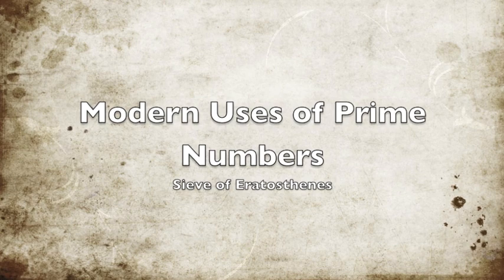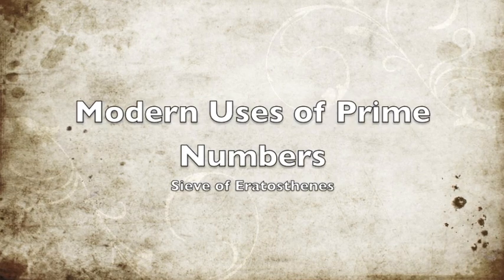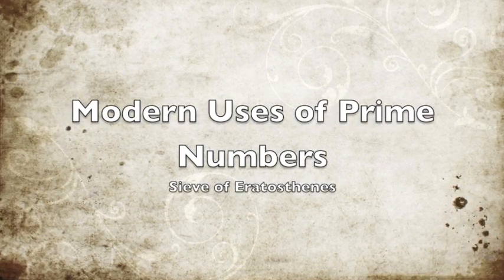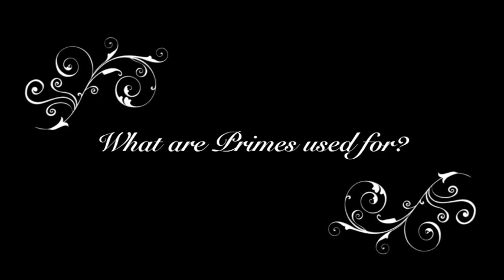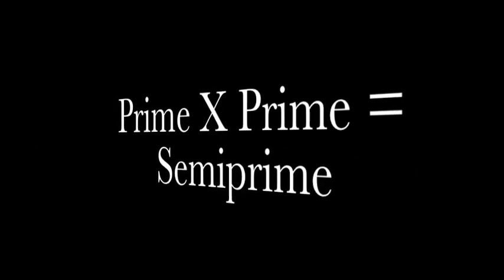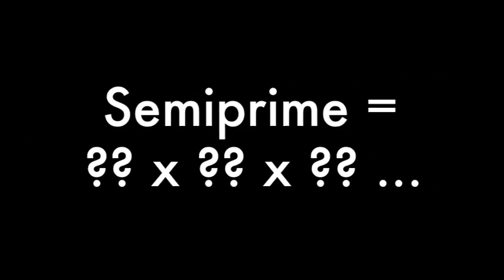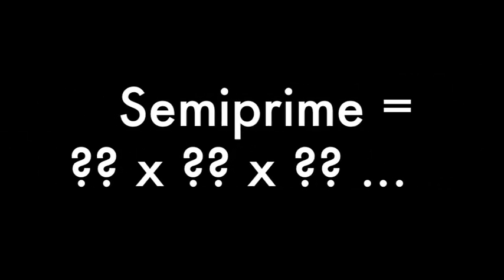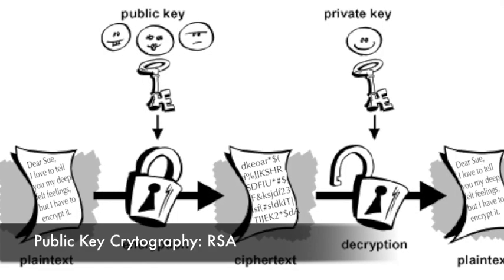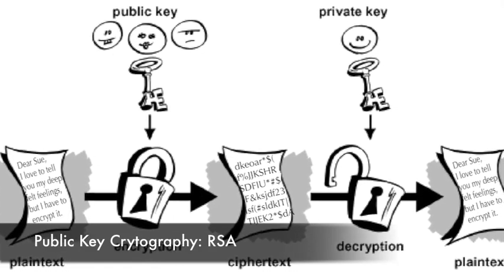We know that the sieve of Eratosthenes can be used to find prime numbers. So after all the fuss about finding primes, you may be wondering, what can prime numbers be used for? We know that it is relatively easy to multiply two prime numbers together to obtain a semi-prime. It is rather difficult to factorize a semi-prime into its constituent prime number. This special property makes primes useful in public key cryptography.